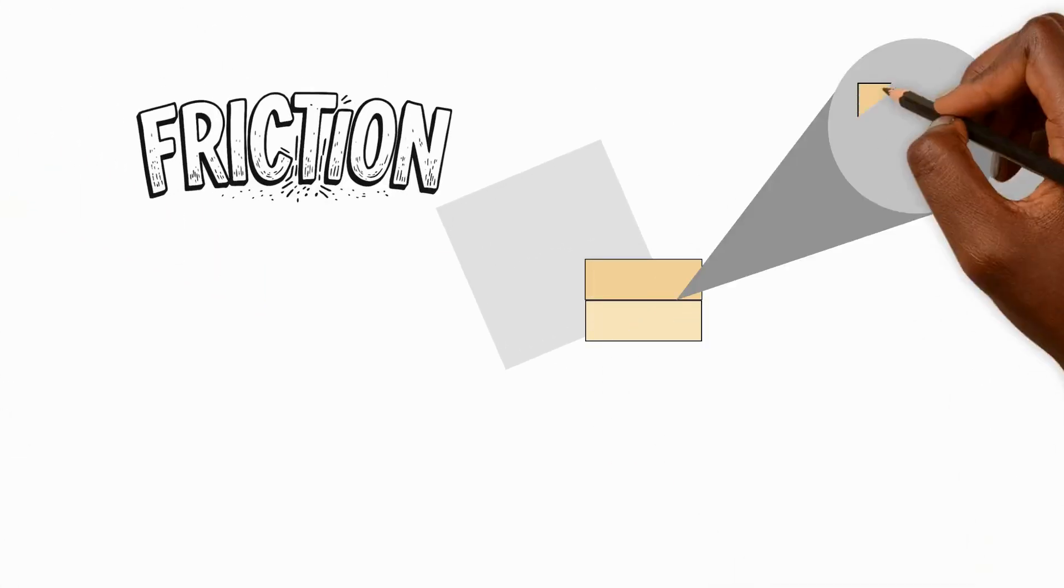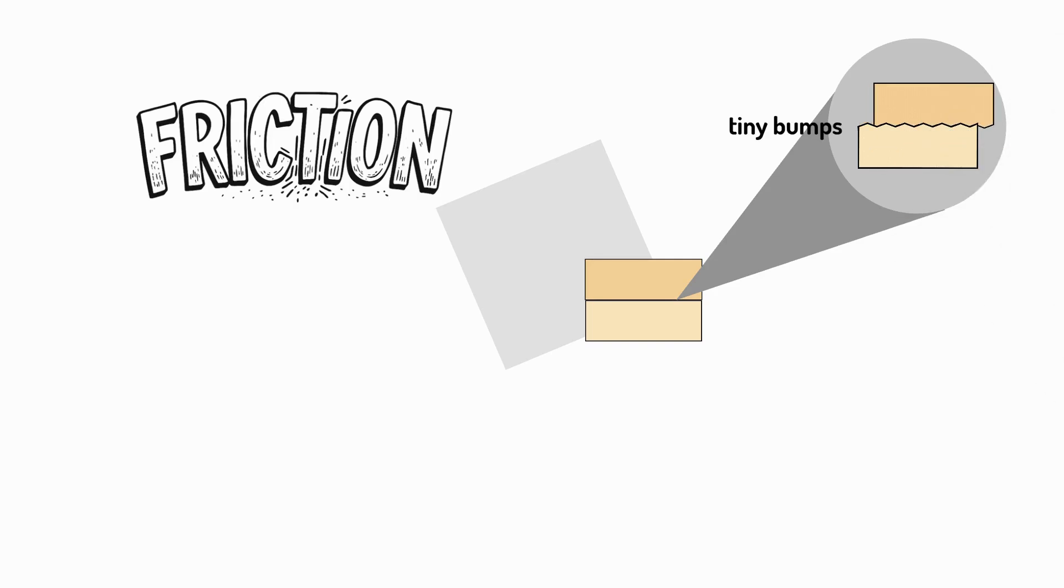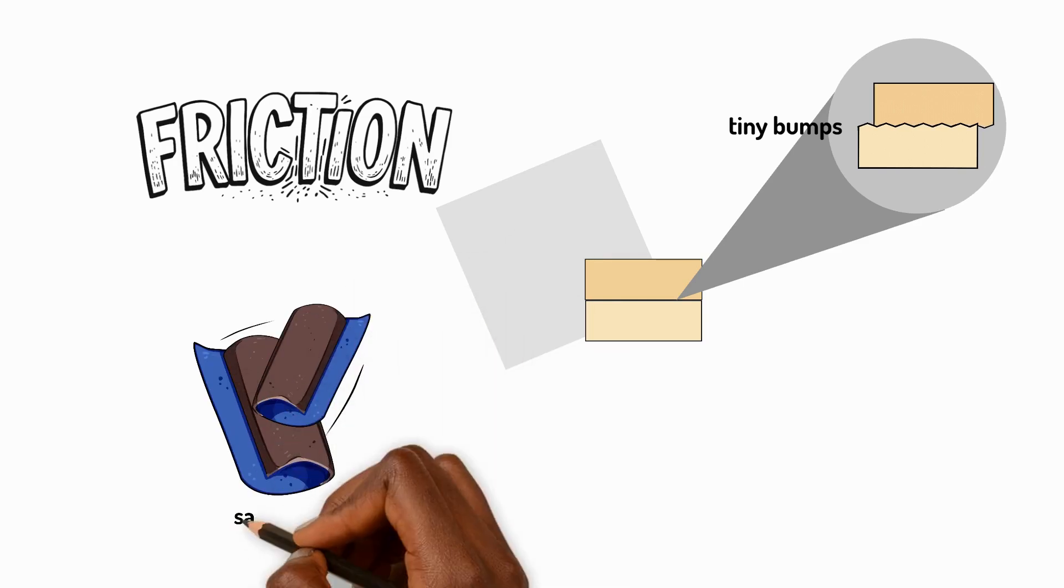Friction happens because even surfaces that look smooth actually have tiny bumps. When two things touch these bumps catch on each other making it harder for them to slide past. It's like when two pieces of sandpaper rub together that's friction.